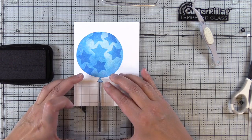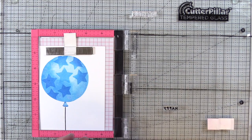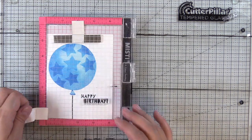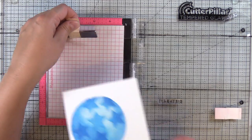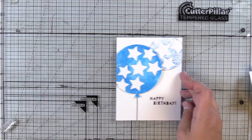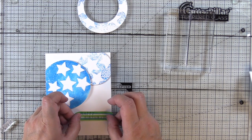I'll go ahead and stamp the balloon string on this one and if you don't get it all the way to that balloon end you can just use a pen to fill in the space. Then I'm going to use the sentiment from the set and I'm stamping this with a black pigment ink so it's nice and crisp. I went ahead and stamped the other sentiment off camera.